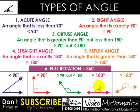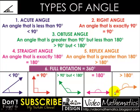A reflex angle is an angle that is greater than 180 degrees. Look here — this angle is greater than 180 degrees. Compare this with this and you will find that it is more than 180 degrees. It's a reflex angle. And a full rotation means the ray comes back to its starting position — a full rotation equals 360 degrees.